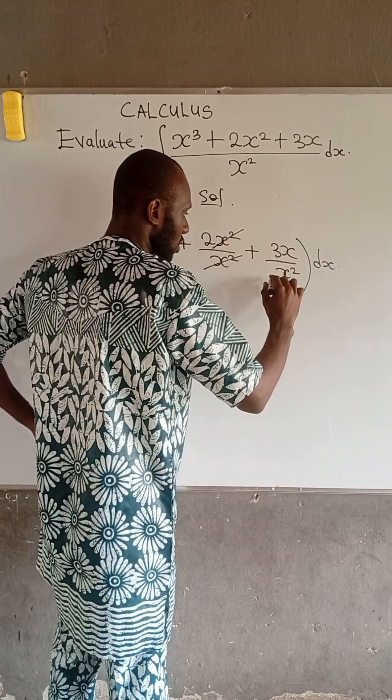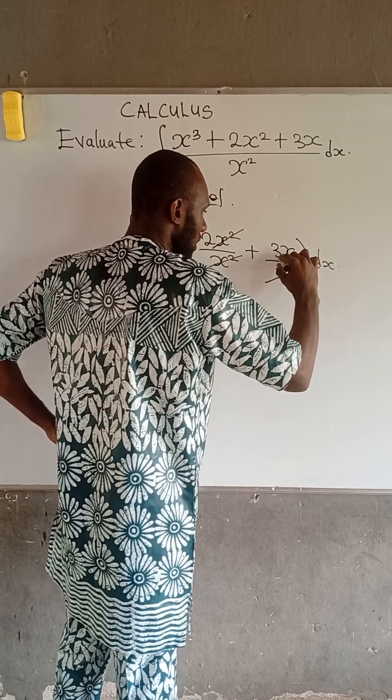At this point, we have x here. So if I cancel out x here, I will have x and here x we go.